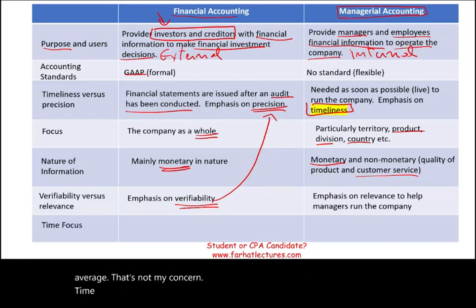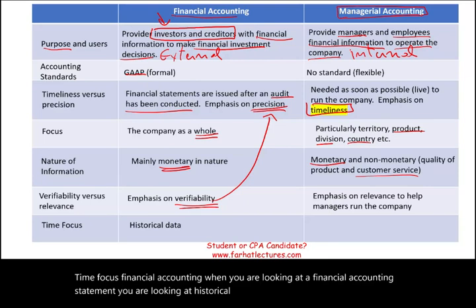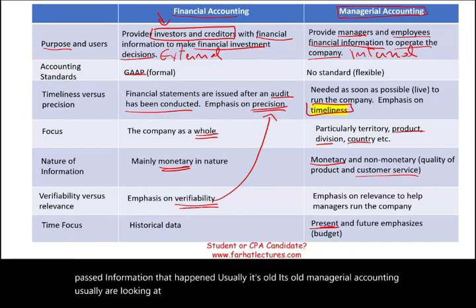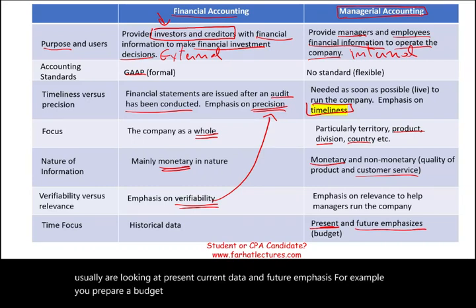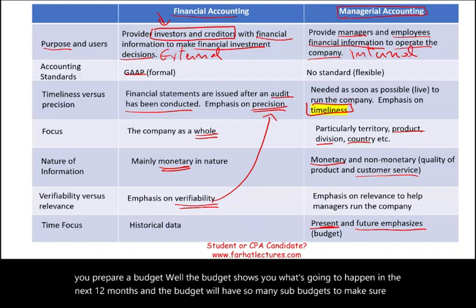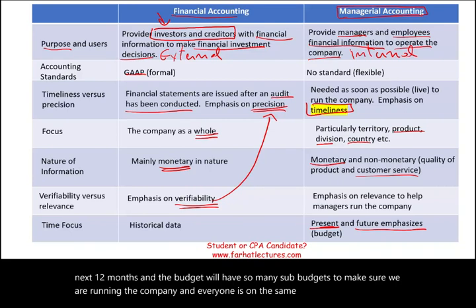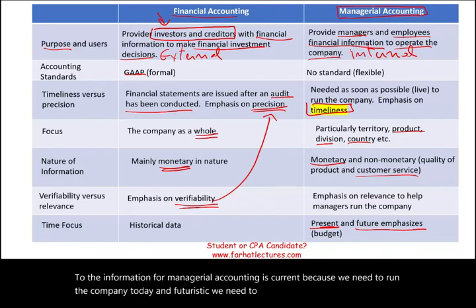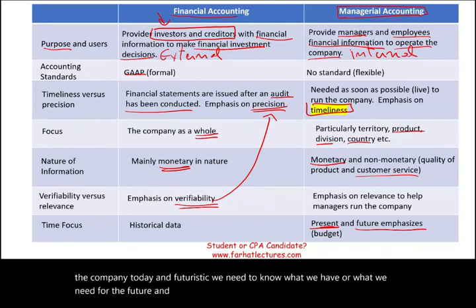Time focus: when you look at a financial accounting statement, you are looking at historical data — data from the past, information that already happened. Managerial accounting, on the other hand, usually focuses on present and current data with a future emphasis. For example, you prepare a budget that shows what will happen in the next 12 months, with sub-budgets to keep the company on track. The information is both current, to run the company today, and futuristic, to plan for what is needed in the future.